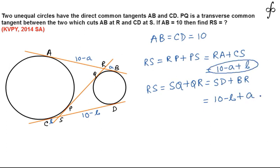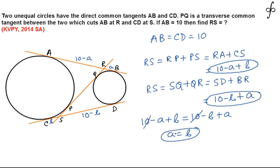This is one way of representing RS and this is another way of representing RS. Both these values should become identical. So 10 minus A plus B should be equal to 10 minus B plus A. 10 cancels out and from here we can easily see that A is coming out to be equal to B.